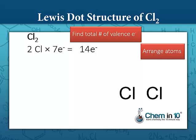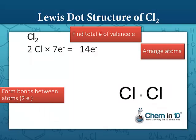Next, we arrange the atoms next to each other and draw the bonds. A single bond consists of two electrons. So now we've used two electrons and we have 12 electrons to go.